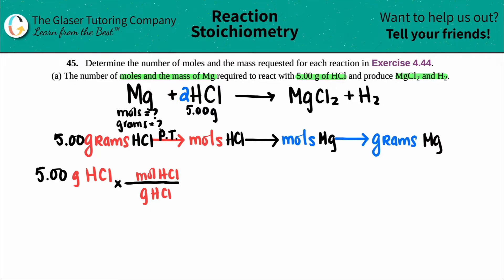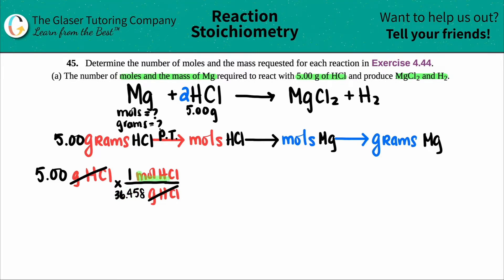When using the periodic table, you always have 1 mole of the compound, so the number 1 goes with the moles. The gram value comes from the periodic table: hydrogen is 1.008 and chlorine is 35.45, giving a total of 36.458 grams per mole of HCl. So the ratio is 1 mol HCl over 36.458 g HCl. Grams of HCl cancel out, and I'm left with moles of HCl.